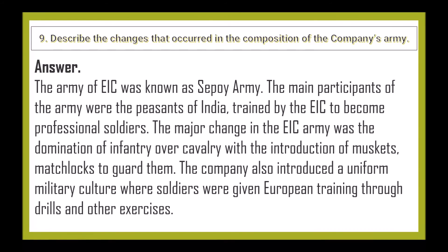Next question: Describe the changes that occurred in the composition of the company's army. The army of the EIC was known as the Sepoy Army. The main participants were the peasants of India trained by the EIC to become professional soldiers. The major change was the domination of infantry over cavalry. With the introduction of muskets and matchlocks, the company also introduced a uniform military culture where soldiers were given European training through drills and other exercises.